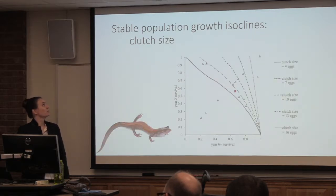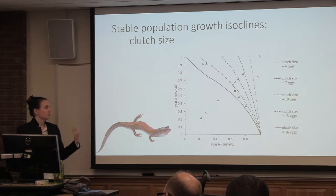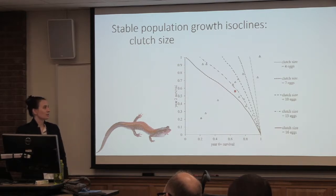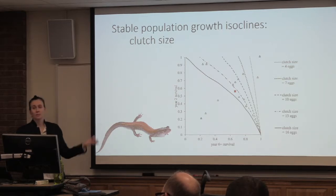We also looked at stable population growth isoclines for clutch size, just because we were interested in how the balancing between adult and juvenile survival would change as clutch size increases. But it's similar to the other ones — there are really only about five or six rates in the middle that seem plausible, even at these highly variable levels of clutch size from four to sixteen eggs.